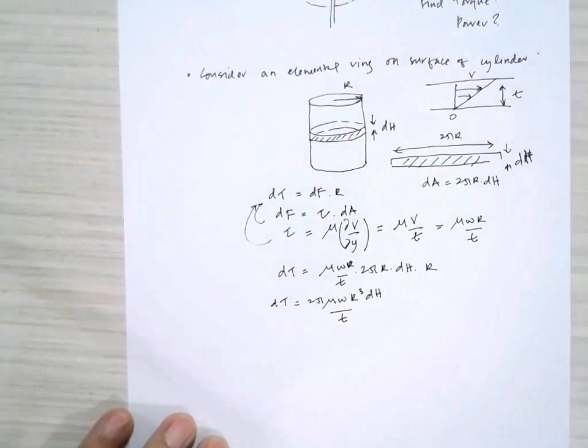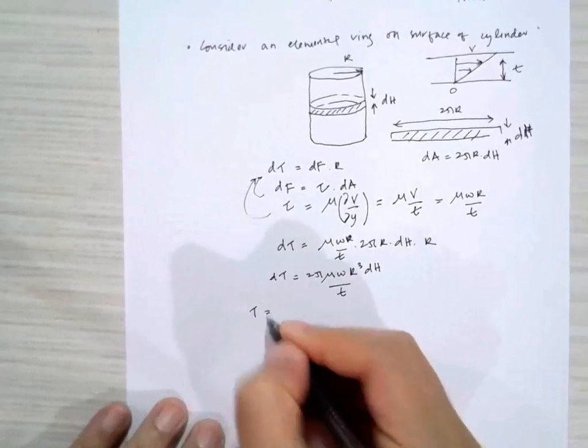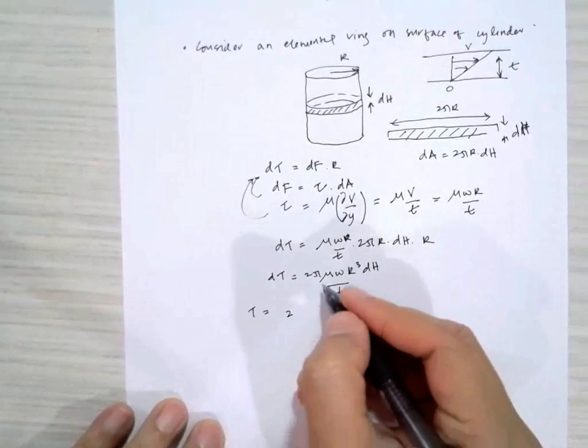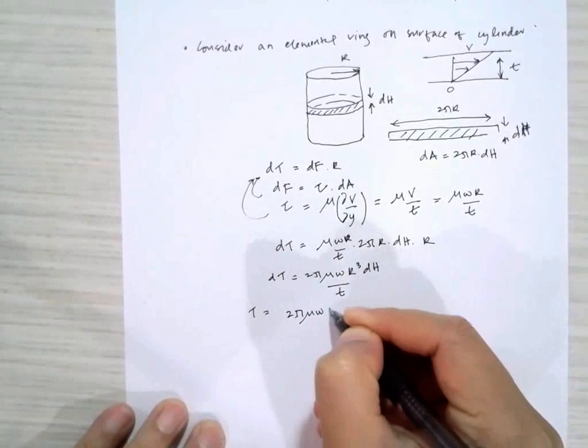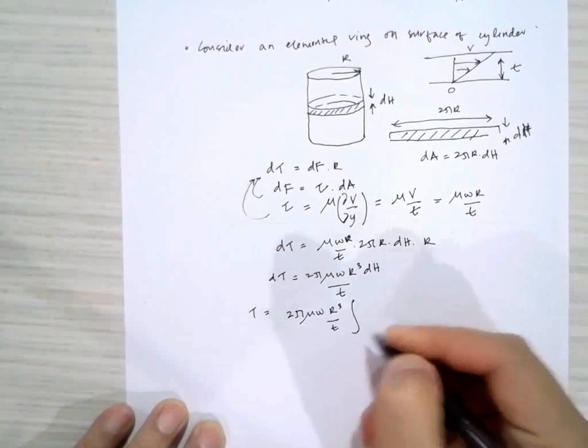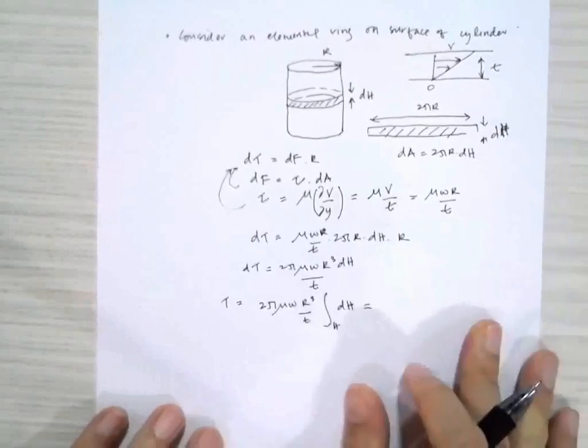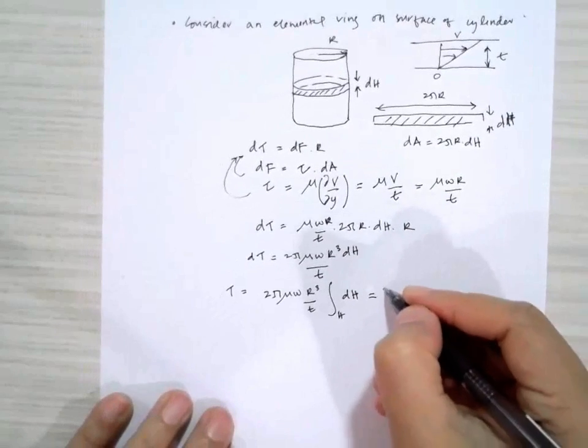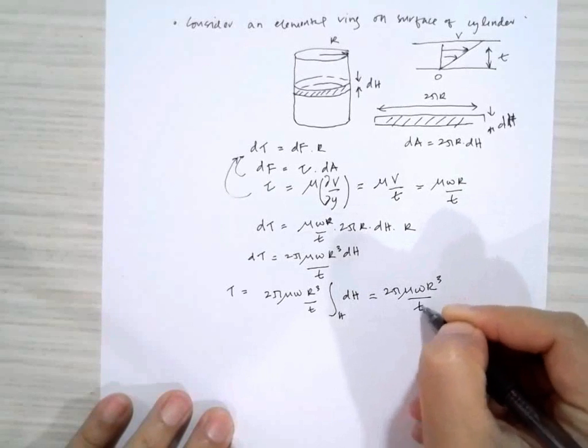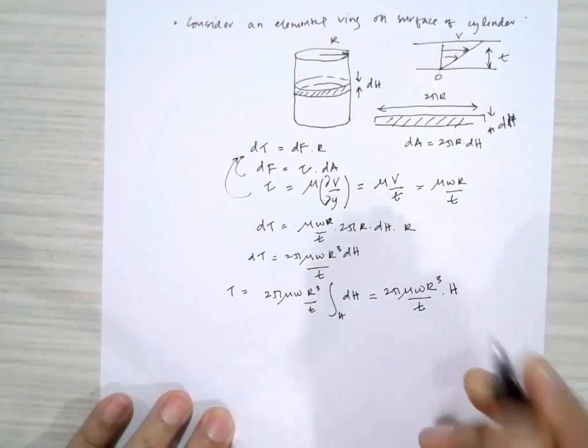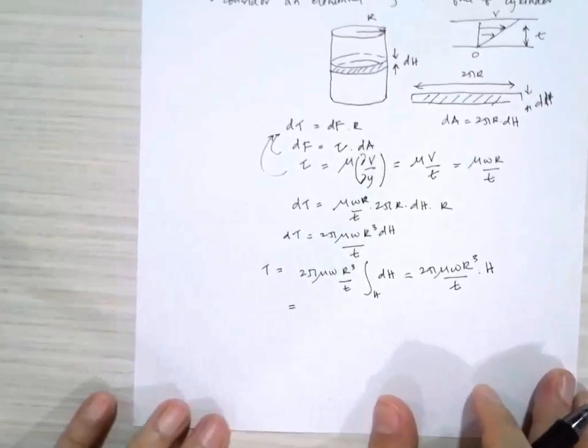Integrating, we put all the constants out: 2π μω r³ over t, then integrate over dh. This gives 2π μω r³ over t multiplied by the total height of the cylinder h.